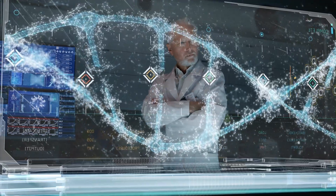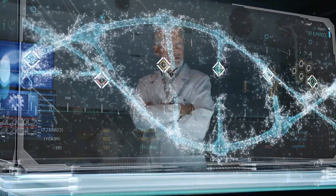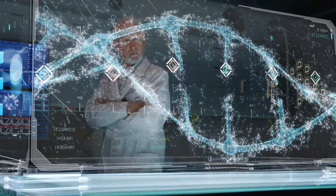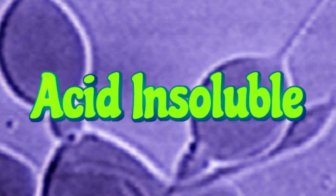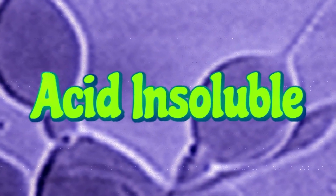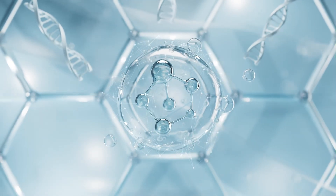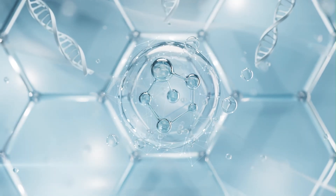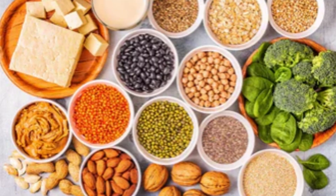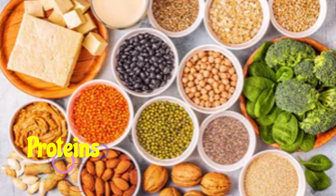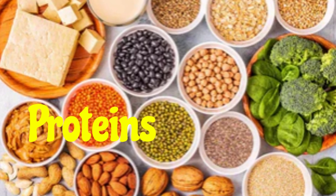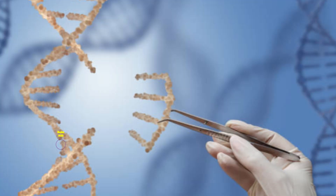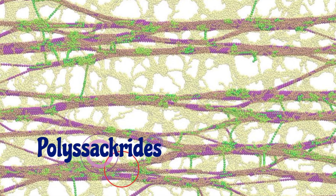Now for the star of our show — the acid insoluble fraction. This is where the heavy hitters reside. We find four main types of organic compounds here: proteins, nucleic acids, polysaccharides, and lipids.